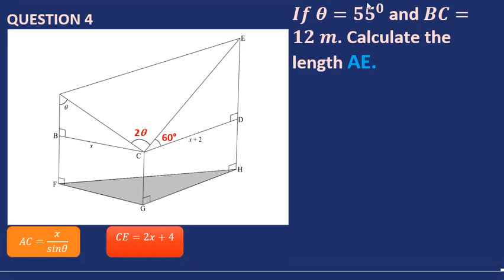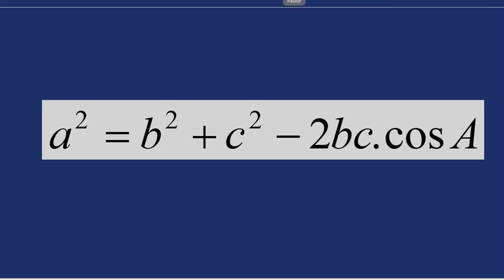In question four, given theta equals 55 degrees and BC equals 12, we want to calculate AE. To find AE we use the cosine rule, since we have two sides — AC and CE — and an included angle. The cosine rule formula is: a squared equals b squared plus c squared minus 2bc times cosine A.